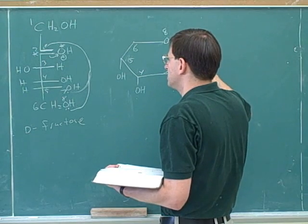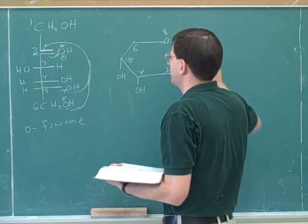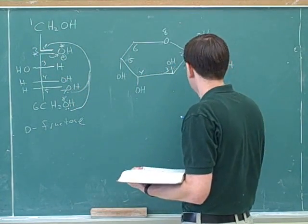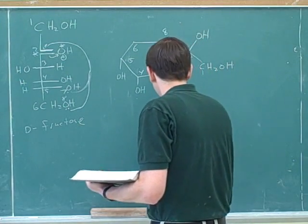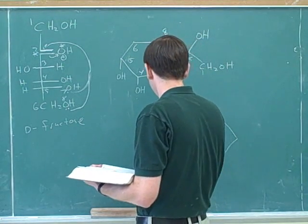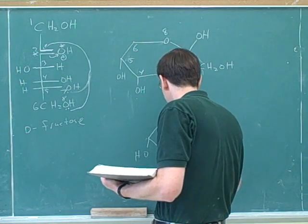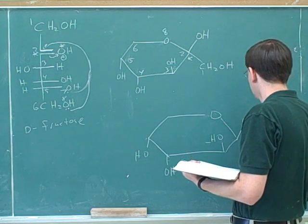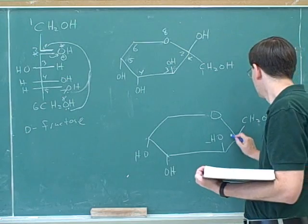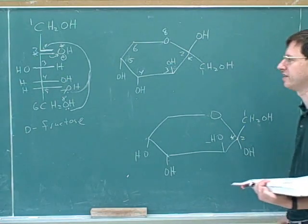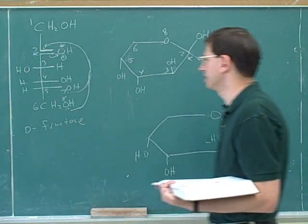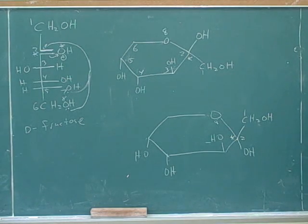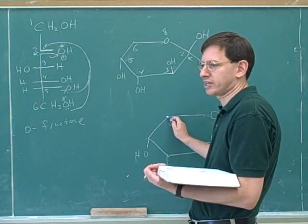On number two we know there are two possibilities. We could draw the beta form — and don't forget the other substituent on number two, which is the number one carbon. I think it's very helpful to put in a lot of numbers and labels when drawing these, including for the oxygen that ends up in the ring. The trickiest thing here is realizing that there are no substituents on the number six carbon.